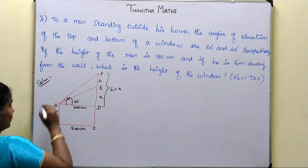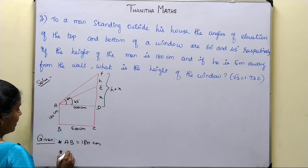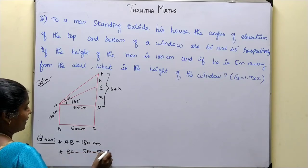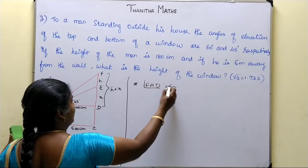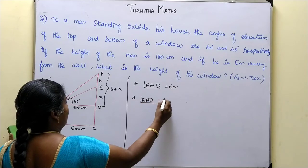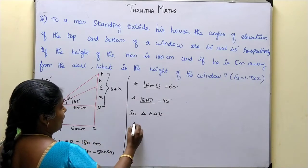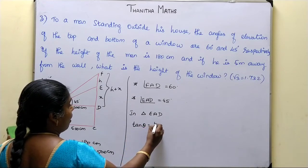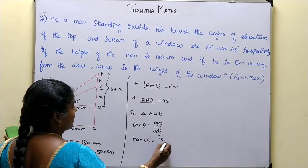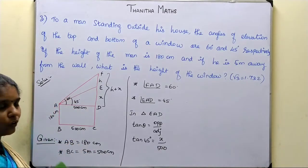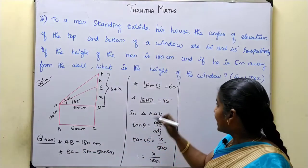Given: AB is equal to 180 cm and BC is equal to 5 m, that is 500 cm. Angle FAD is equal to 60 degrees and angle EAD is equal to 45 degrees. In triangle EAD, we use tan theta equals opposite side by adjacent side. So tan 45 equals x by 500. Since tan 45 equals 1, x is equal to 500.